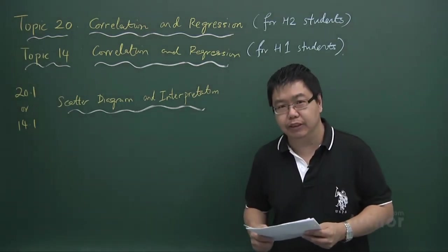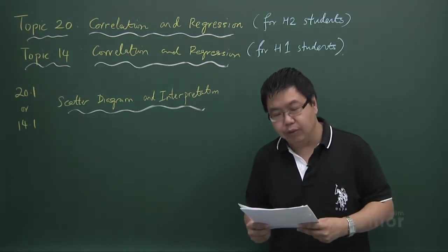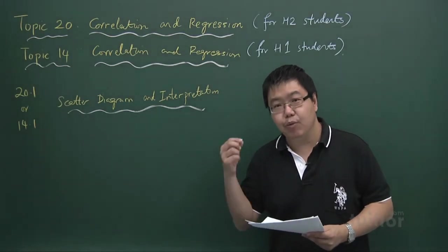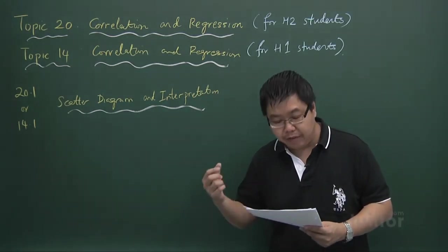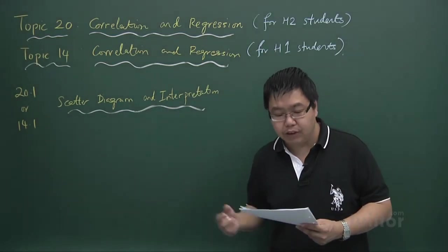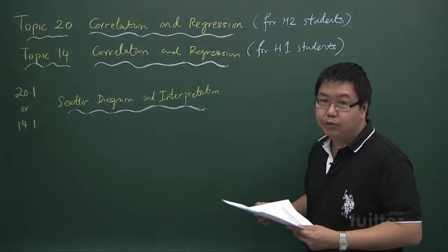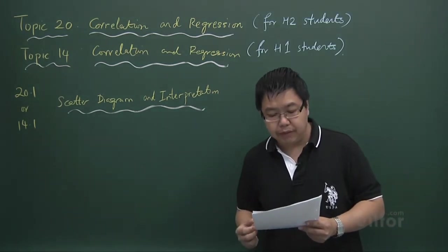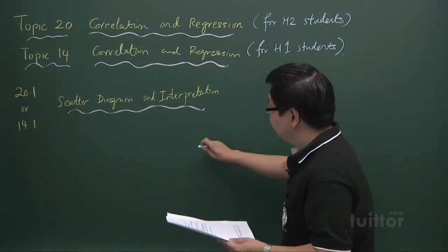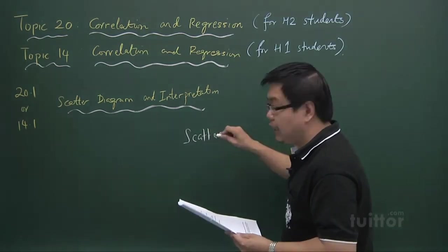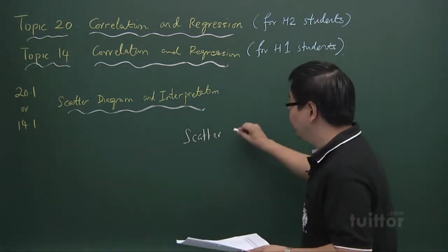So far in the previous chapters on statistics, we are looking at what we call the univariate situation. That means there is only one variable and we want to study that variable. In this chapter, chapter 20 or chapter 14 for H1 students, we are looking at some kind of interaction between two variables. Scatter diagram is one of the useful concepts that allows us to study the relationship between two variables.